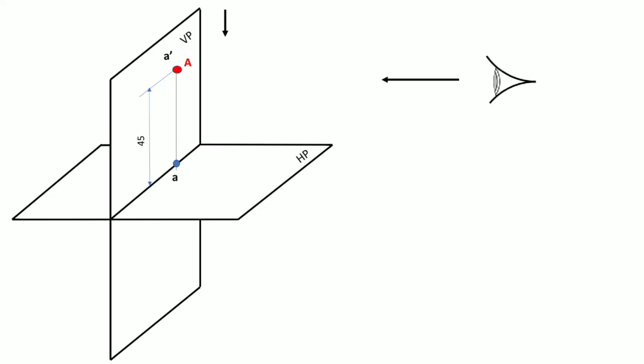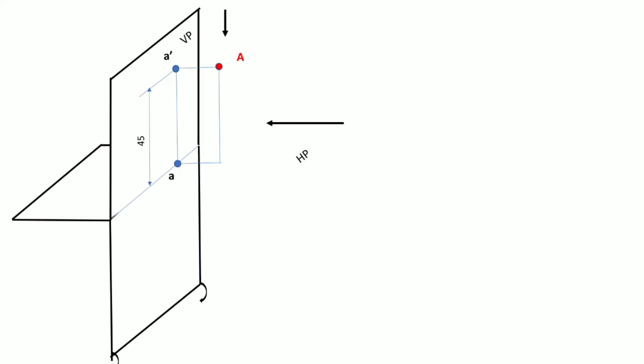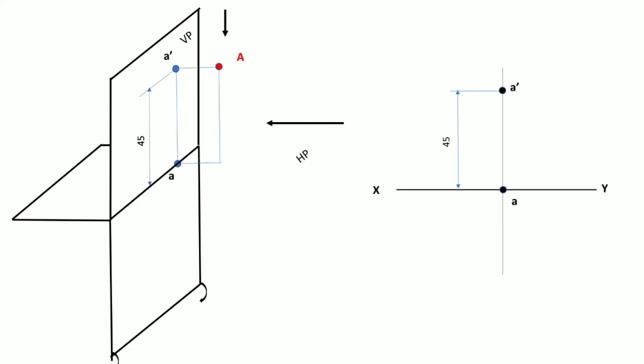Point a will be on the line joining the vertical plane and horizontal plane. We rotate the horizontal plane by 90 degrees again and draw the projection of point A with respect to the XY line. We draw the XY line first, then at a distance of 45 mm we plot point a-dash. Once we get point a-dash, we draw a straight vertical projector line, and since point a comes exactly on the XY line, we mark point a on the XY line itself.